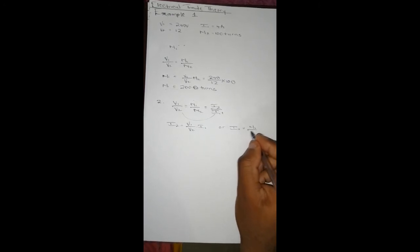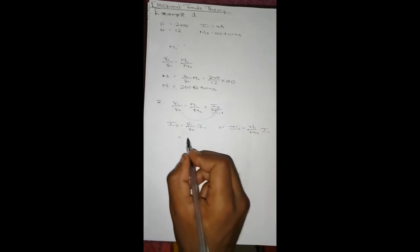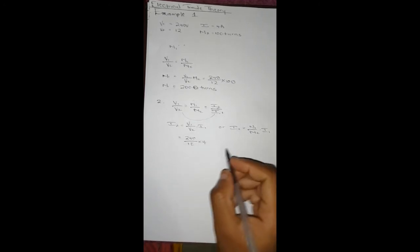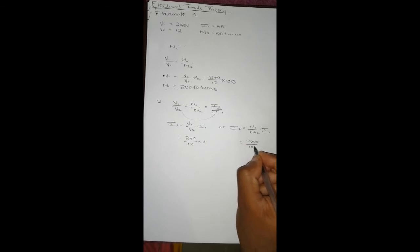Then we substitute: we have 240/12 × 4, which is going to be the same as 2000/100 × 4.